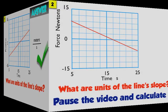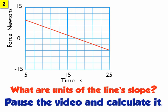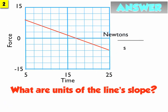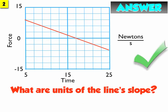Second question: what are the units of the line's slope? If you look at it, units of the rise divided by units of the run means the units of the slope are newtons per second.